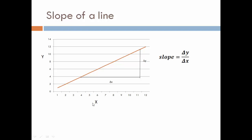To understand differentiation better, start with the slope of a line. When you plot the graph of some quantities along the x-axis and y-axis, with random values, and you have a straight line, you find the slope as the change in value along the y-axis divided by the change in value along the x-axis. You also denote the slope by tan θ, where tan θ again gives you Δy upon Δx.